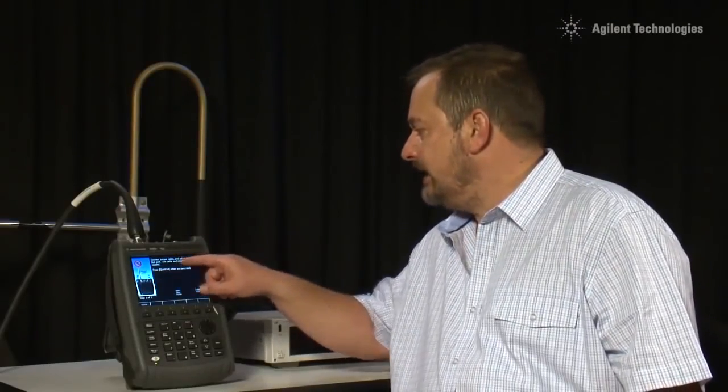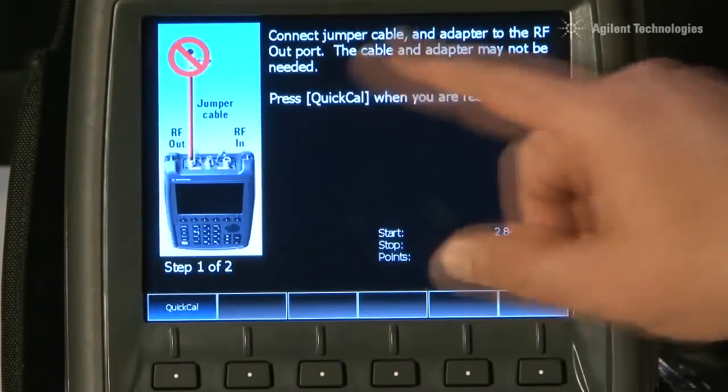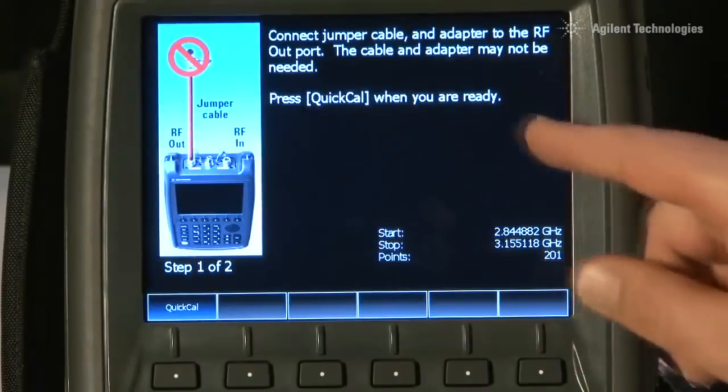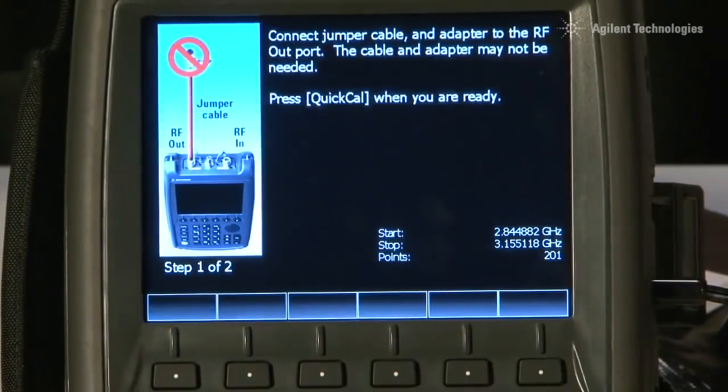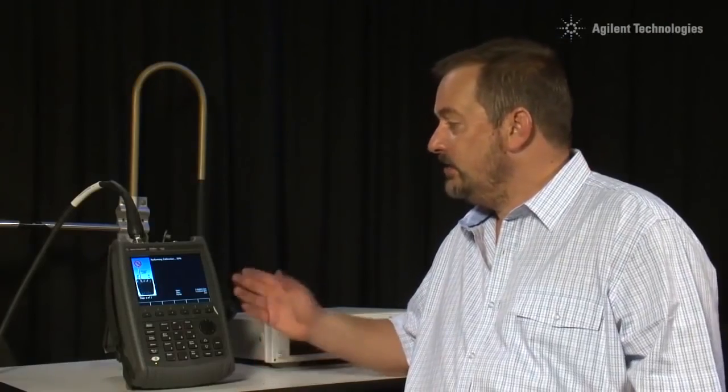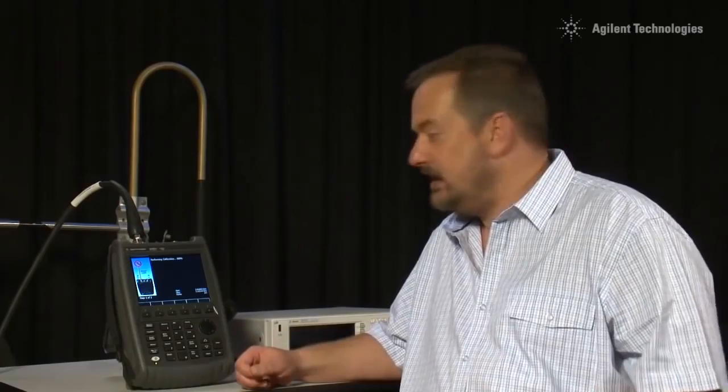and adapter to the RF out port. The cable and adapter may not be needed, but we want to calibrate out the effect of this cable. It says, Press QuickCal when you are ready. So I will press that, and it is now performing the calibration. It is just using the open circuit end of the cable. It does not require any specific standards.